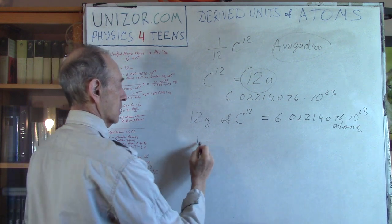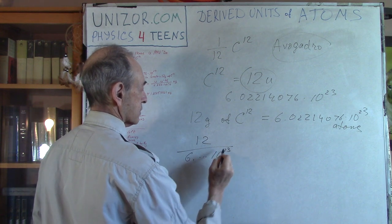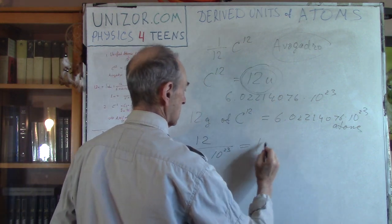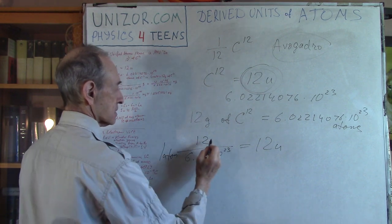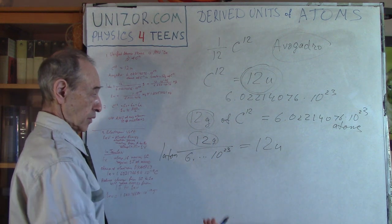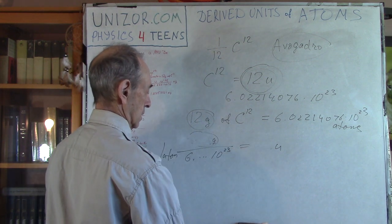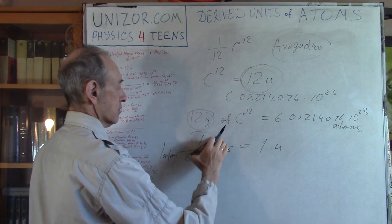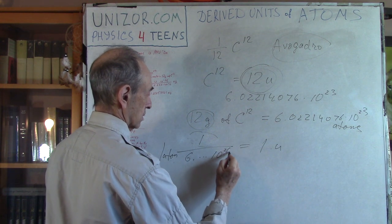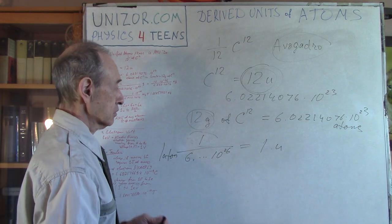So one atom weighs how much? 12 divided by this number, 6 point blah blah blah, 10 to the 23rd. This is one atom. And one atom is 12 units. This is gram, by the way, 12 gram. So one unit is what? Divide by 12. And this is gram, so we need kilograms, so it would be 1000 factor in denominator. So that's basically what one unit is.